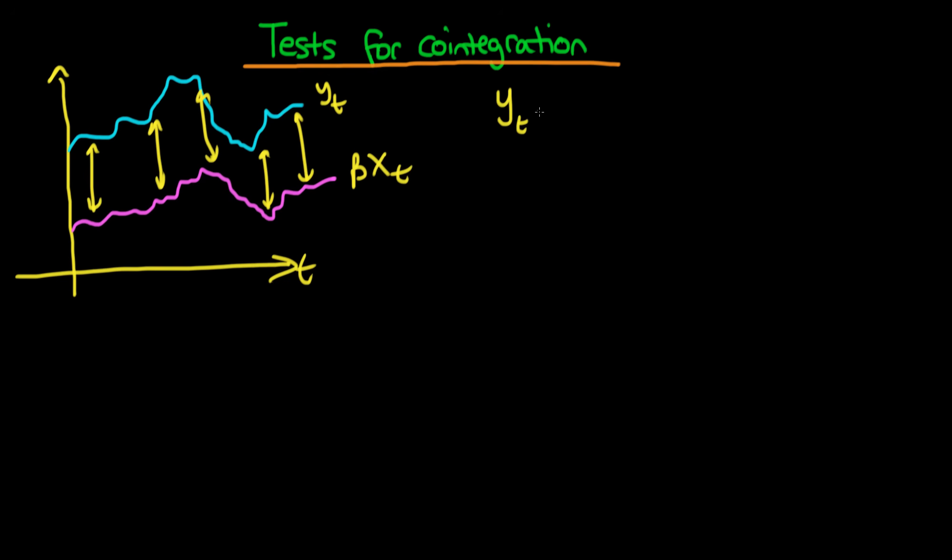So the idea here is that if I take my original Yt and I take a particular value of beta times Xt and let's call that epsilon t, the idea here is that if there is some meaningful relationship between Yt and Xt and that relationship holds for all time, some sort of linear relationship that is, then the idea is that Et here should be I0. In other words it's a stationary process which is weakly dependent.